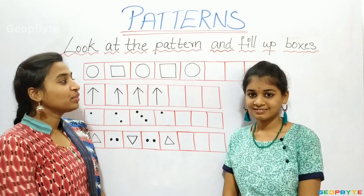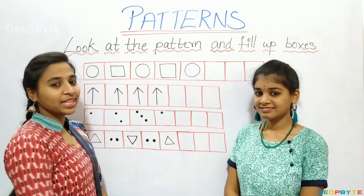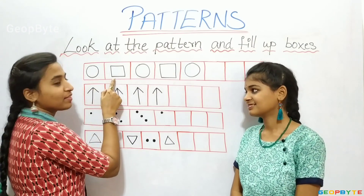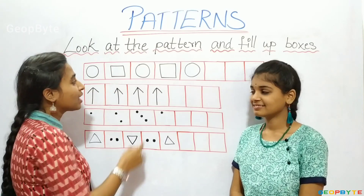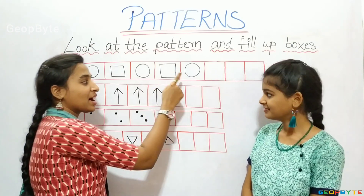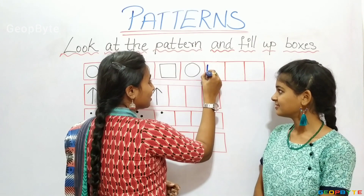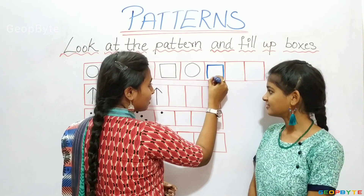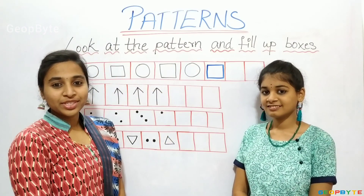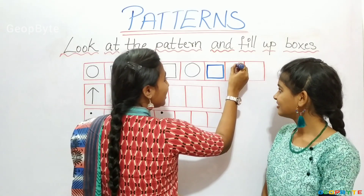We have to fill these boxes. After circle, what comes there? Let us see. After circle, we have a square. After circle, we have a square. So after circle, a square comes. Let us draw. Now, after square, what comes? Yes, a circle comes. Let us draw.